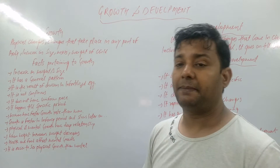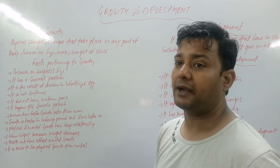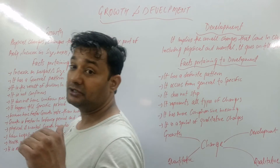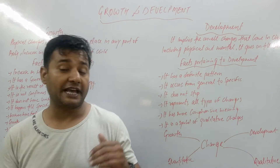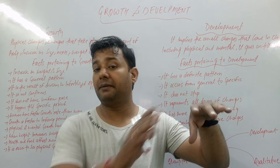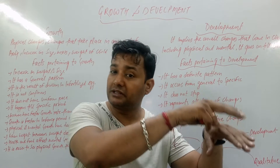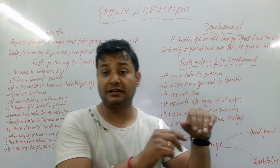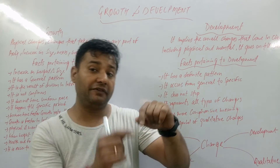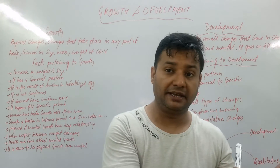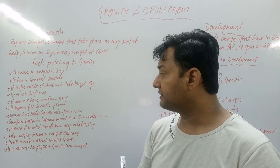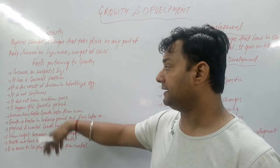Then, growth has a general pattern. With every age, there is a pattern — the age and size are defined. When a child is growing, it tells us that a child of this age should have this much growth, this size, and this weight. That is a specific pattern — we do have a specific pattern for that.